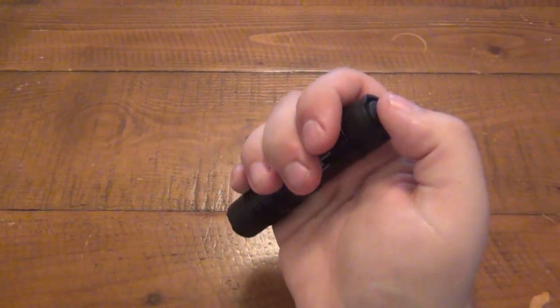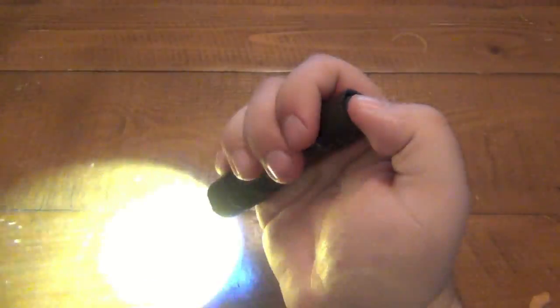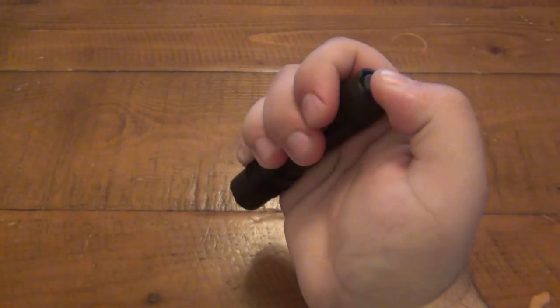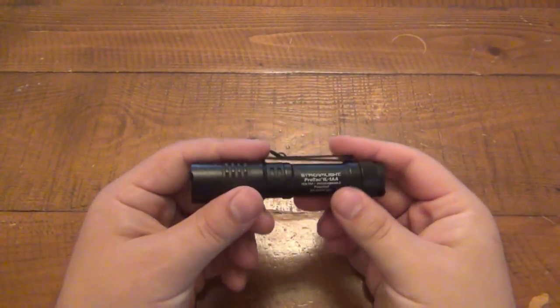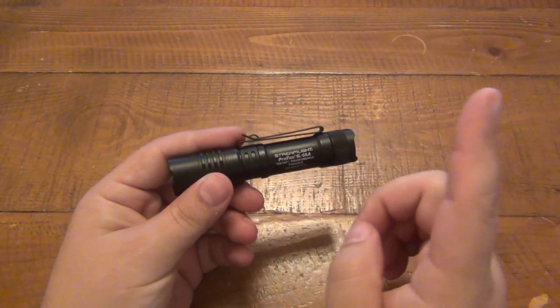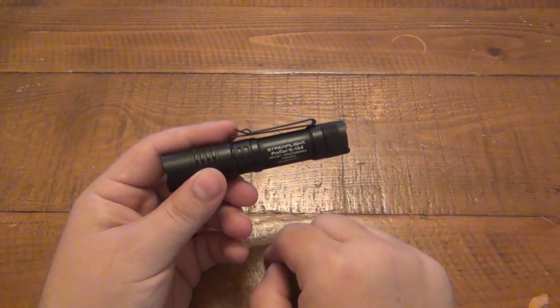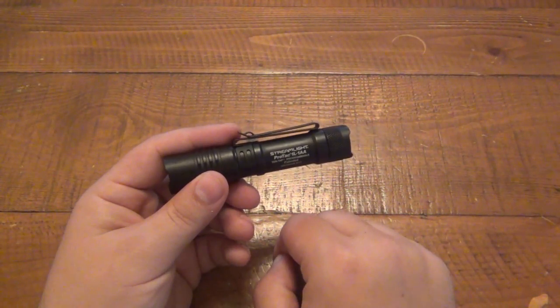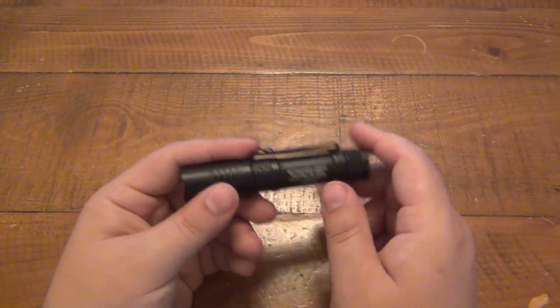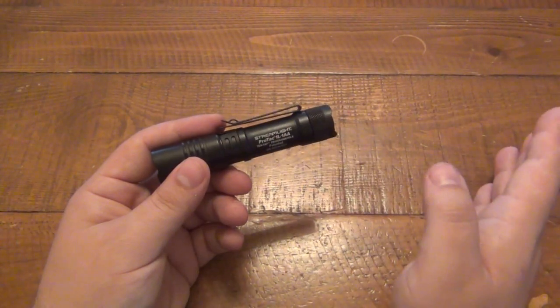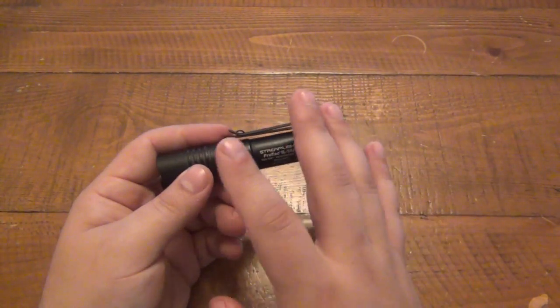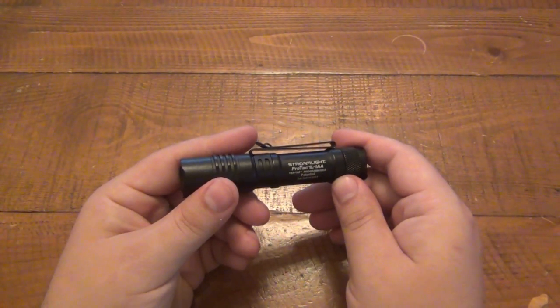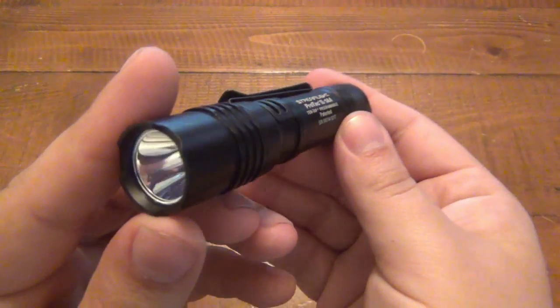So those are your three interfaces. I'm going to go back to default. 1, 2, 3, 4, 5, 6, 7, 8, 9, 10. So, first interface, to recap, we have high. Then if you double tap, it is strobe. Then if you triple tap, it's low. The second interface is going to be just high all the time, nothing else. And then the third one is just low all the time, unless you double tap, which gives you that high mode.